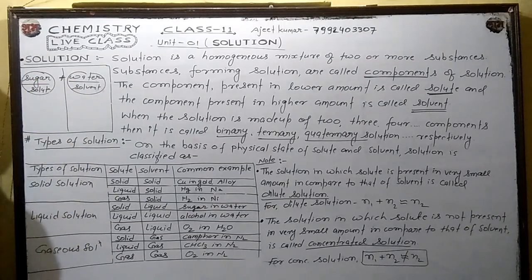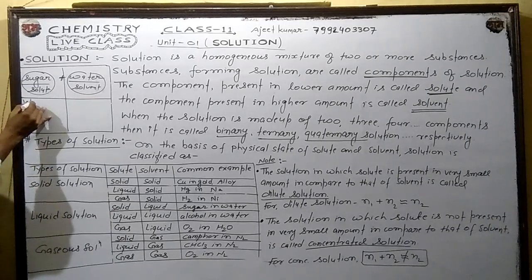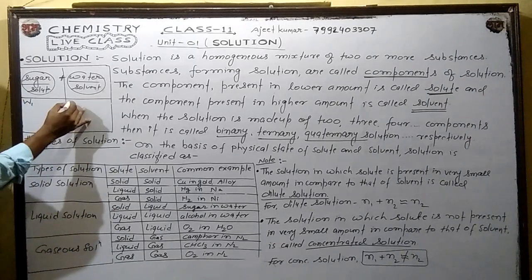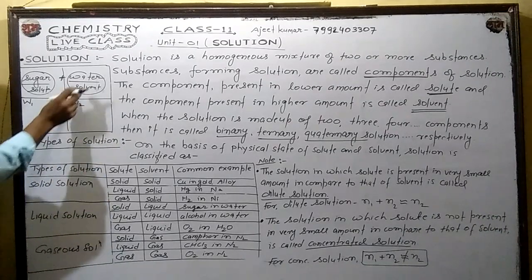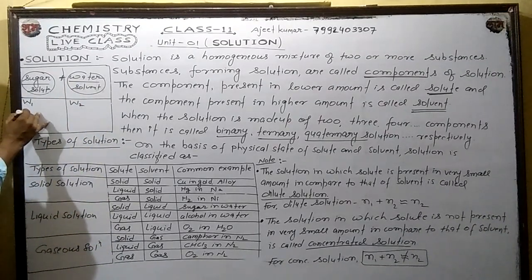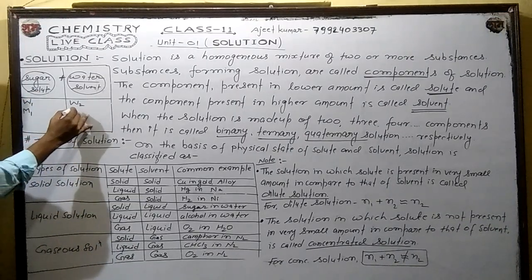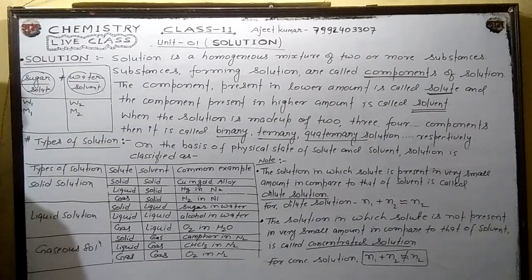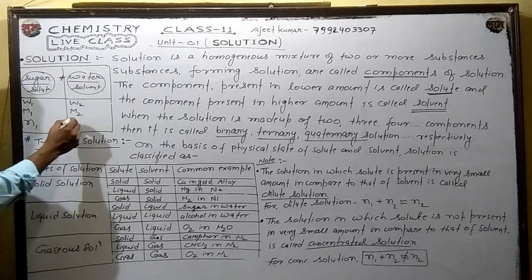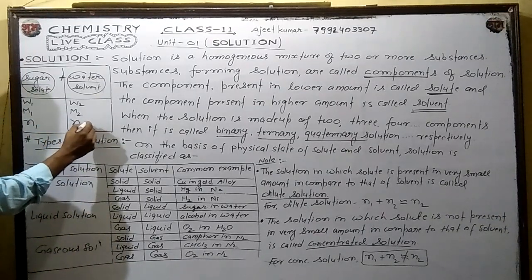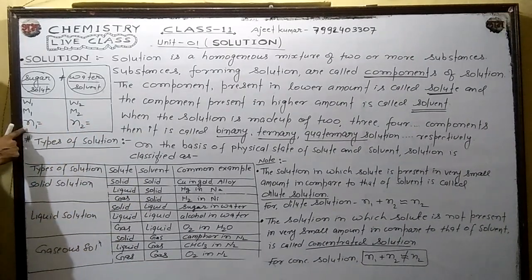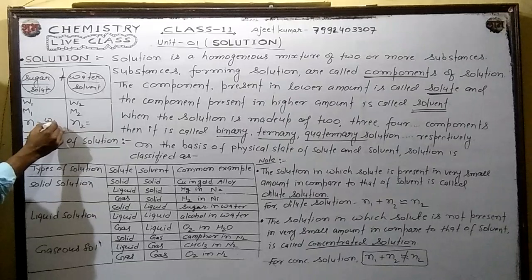Now, here are some symbols we need to remember. W1 is the mass of Solute. M1 is the molar mass of Solute. M2 is the molar mass of Solvent. N1 is the number of moles of Solute. N2 is the number of moles of Solvent. N1 is calculated as W1 divided by M1.